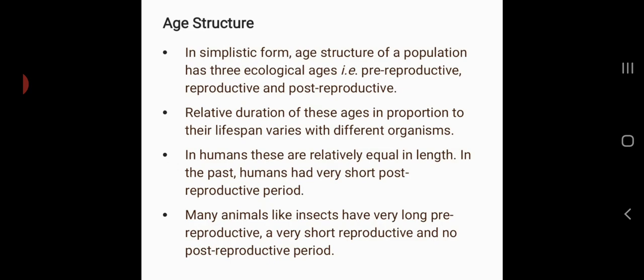Mainly there are three age groups in any population: pre-reproductive, reproductive, and post-reproductive. The relative duration of each age group varies from species to species. In humans, for example, these are relatively equal in length, though in the past humans had a very short post-reproductive period due to low life expectancy. An interesting example is insects like mayflies, which have a very long pre-reproductive period, a very short reproductive period, and almost no post-reproductive period.